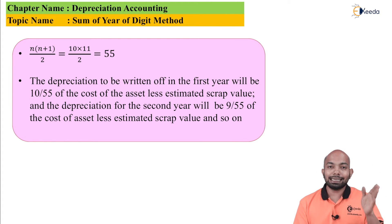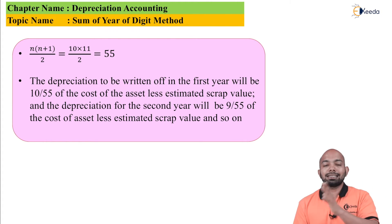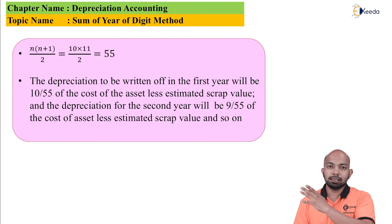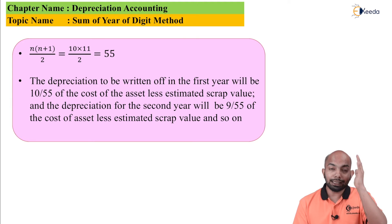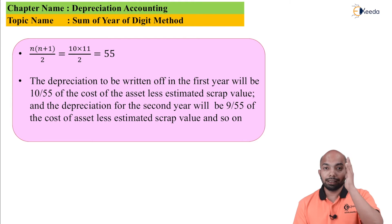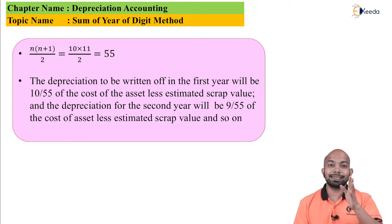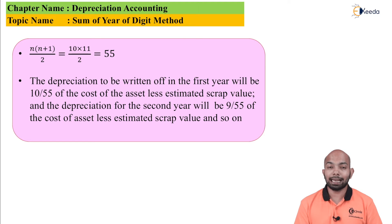If it is 10 years: 10, 9, 8, 7, 6, 5, 4, 3, 2, 1. So for the first year it will be 10/55, then 9/55 for the second year, then 8/55 for the third year. That is the depreciation amount calculated under this method.